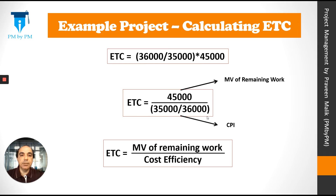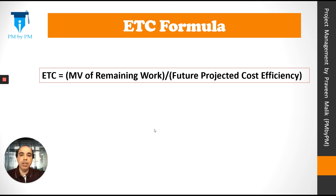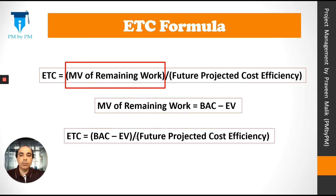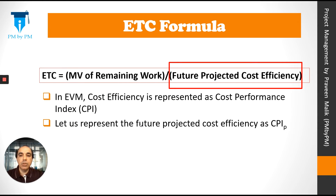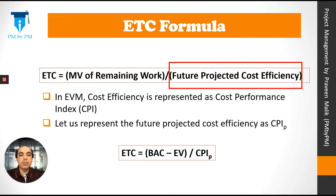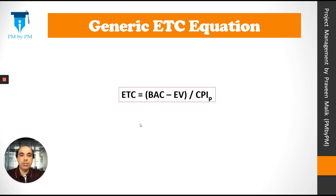This is our current cost efficiency, but it may change in future. So let's rewrite the ETC formula as: ETC equals MV of remaining work divided by future projected cost efficiency. Since MV of remaining work equals BAC minus EV, the formula becomes: ETC equals (BAC minus EV) divided by future projected cost efficiency, represented as CPI_P. So the generic ETC equation is: ETC = (BAC − EV) / CPI_P.